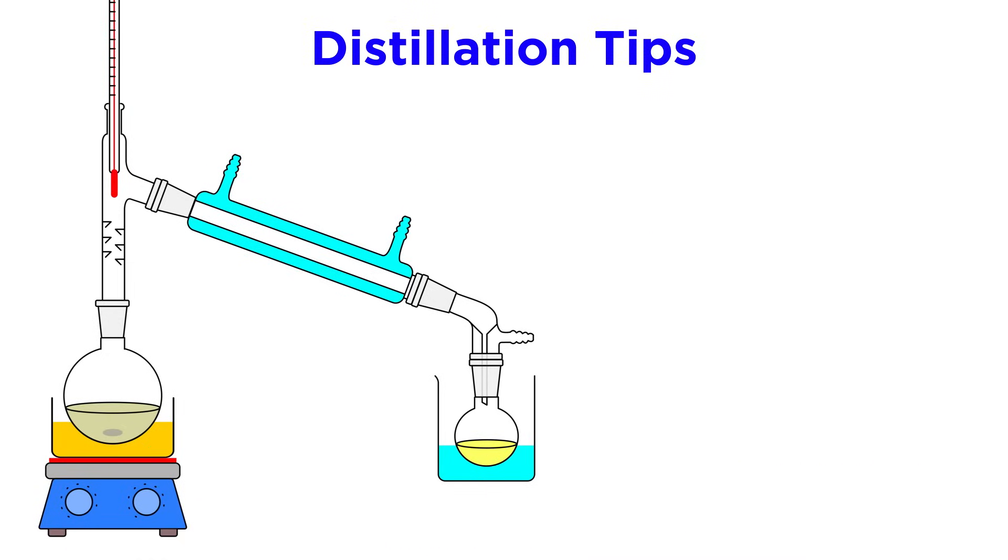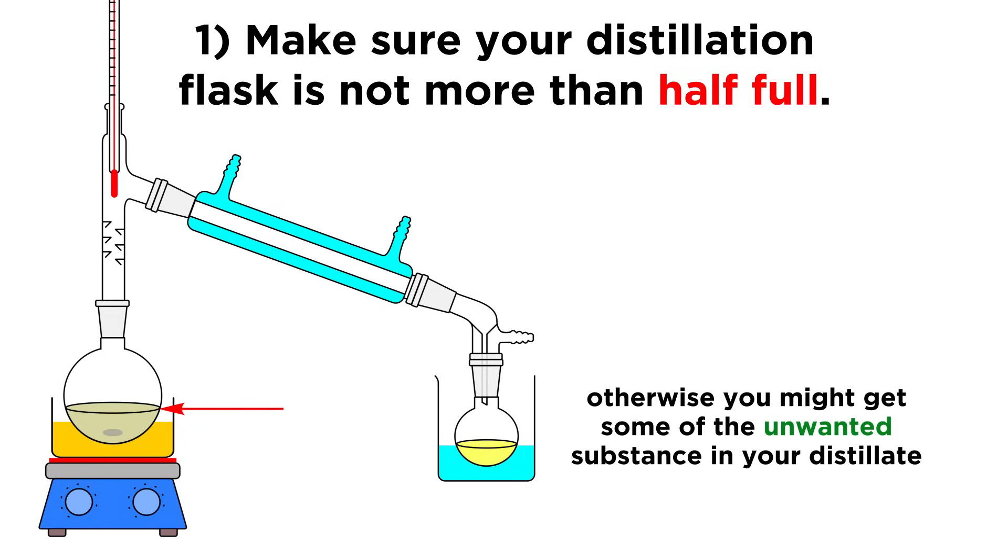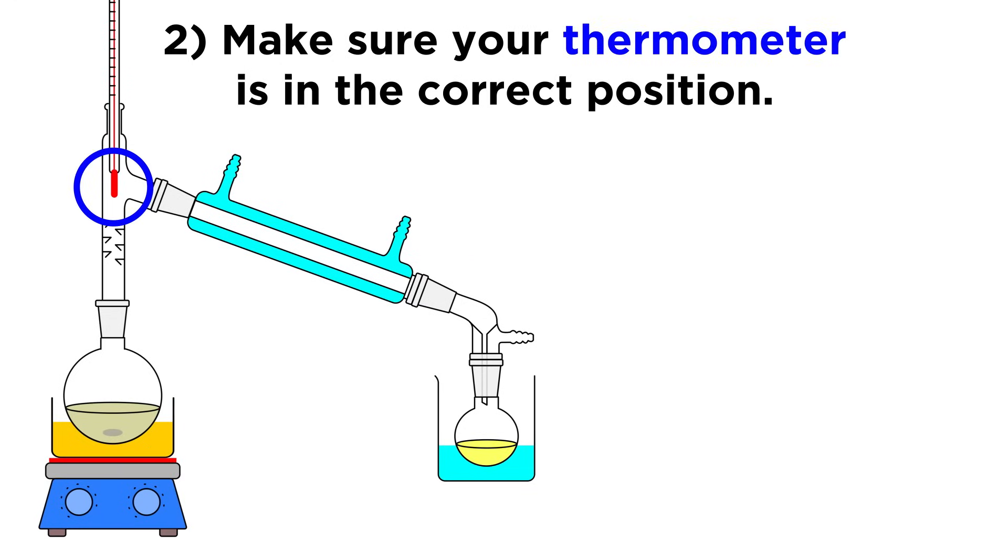Now let's mention a few quick tips to make sure your distillation goes smoothly. First, make sure your distillation flask is not more than half full. If it is too full, some of the unwanted substance might make it into the distillate. Second, make sure your thermometer is in the right position, up here, as we want to measure the temperature of the vapor, not the liquid.